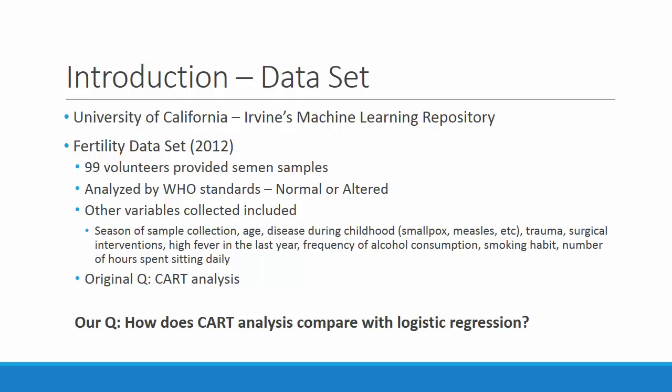We found our dataset on UCI's machine learning repository, where we saw a fertility dataset that caught our attention. It had 99 data points from 99 volunteers providing semen samples, which were then analyzed by WHO standards to determine if they were of normal or altered quality. The dataset also provided other variables, such as the season during which a sample was collected, the age of the subject, if they had any diseases during childhood, if they experienced any trauma, and if they had surgical interventions, as well as if they had high fever during the last year, and the frequency of their alcohol and smoking habits, and finally, how many hours a day they spent sitting.